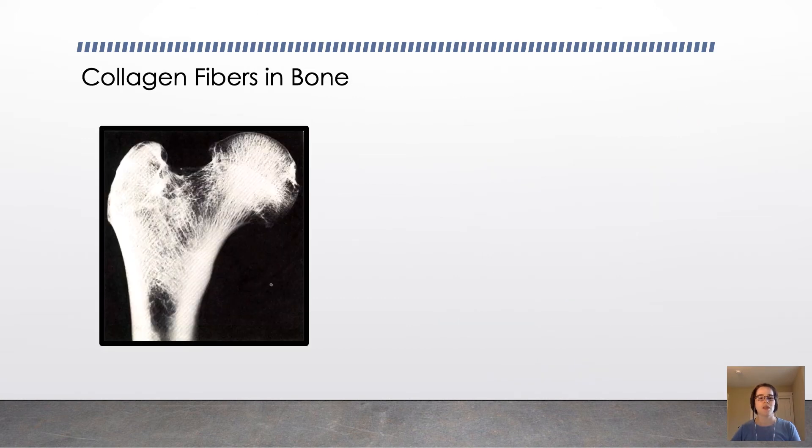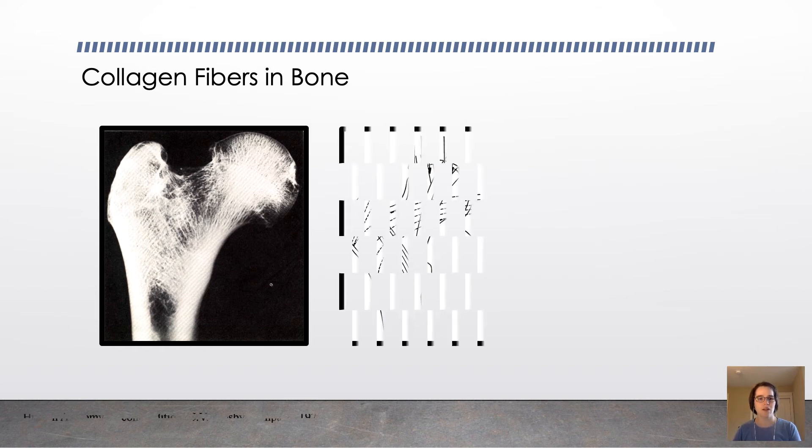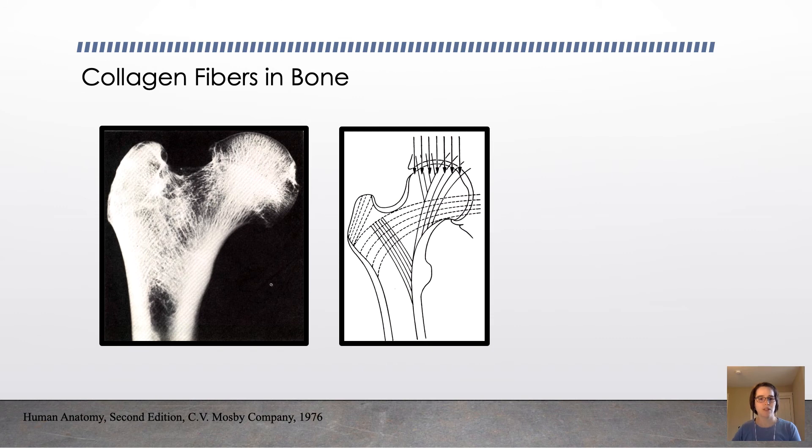So if you take an actual femur and dissolve the minerals so that you're left with only the collagen, you'll see something that looks like this where the collagen fibers are oriented across the head of the bone and through the neck of the femur.